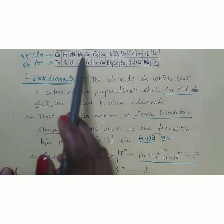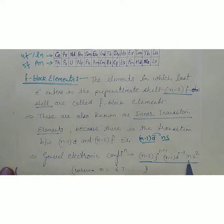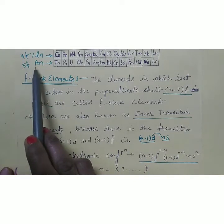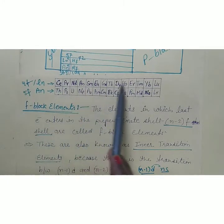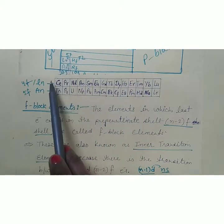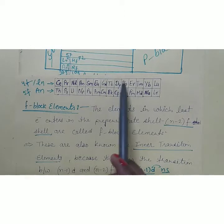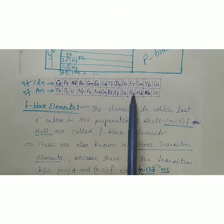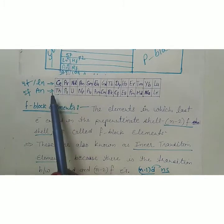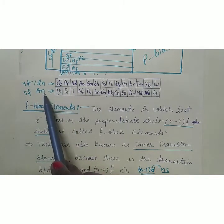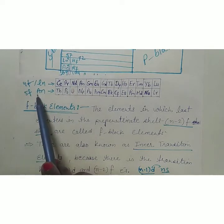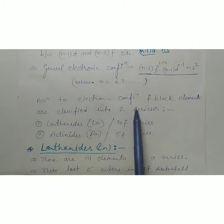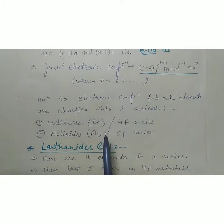Lanthanides are known as the 4F series because the electron will enter in 4F subshells. If N is equal to 7, then it will be 6D and 5F. The properties of the 4F series are the same as lanthanum, so these are known as lanthanides or lanthanons. The 5F series shows properties like actinium, so those elements are known as actinoids or actinons. Lanthanoids are shown as group LN and actinoids as AN.